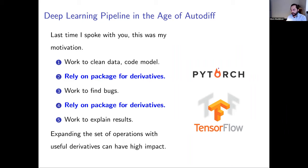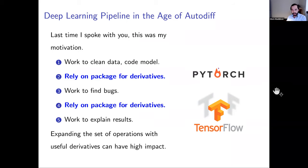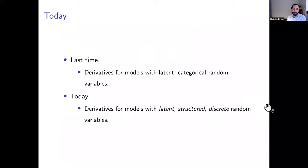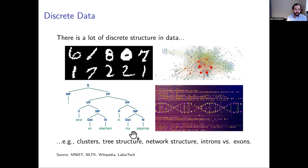Steps two and four — implementing the model and running reliable derivative computations — are really critical steps that have completely liberated our ability to explore the space of models. They've realized many different dreams in statistics and machine learning, related to things like probabilistic programming where you can express a modeling desire and have a software package do all the grunt computations. So if you're able as a researcher to expand the set of operations that have useful derivatives, you can have an outsized impact on model development.